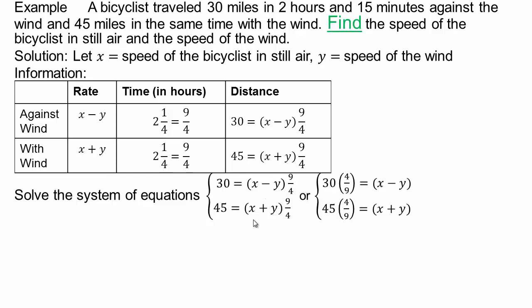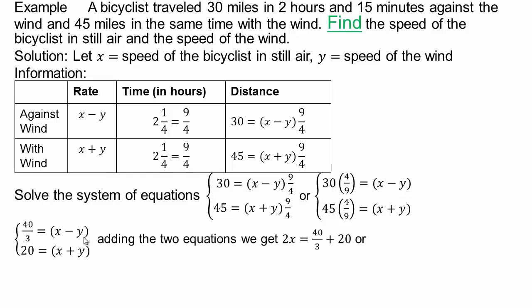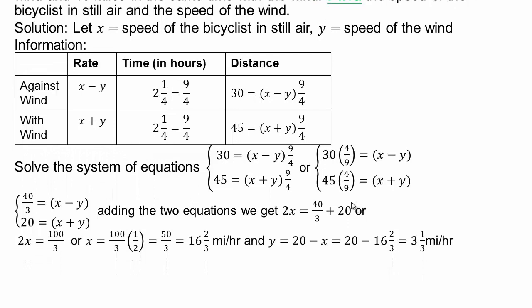So: 30 equals (x minus y) times 9/4, and 45 equals (x plus y) times 9/4. Dividing both sides by 9/4 simplifies the system. Adding the two equations gives 2x equals 40/3 plus 20; solving gives x equals 16 and 2/3 miles per hour. Substituting back gives y equals 3 and 1/3 miles per hour. Check for reasonability — a wind speed of 50 mph would be unreasonable, but 3 and 1/3 mph is realistic for cycling conditions.